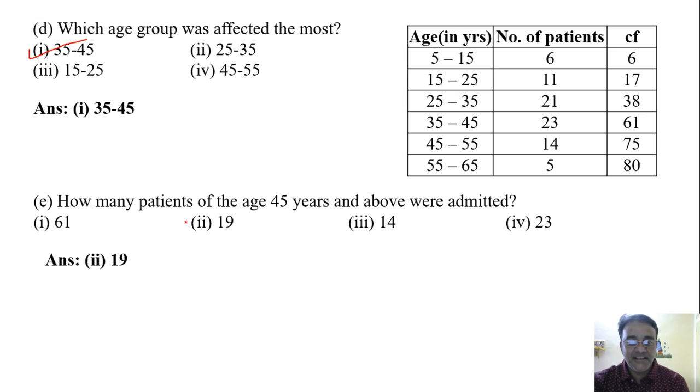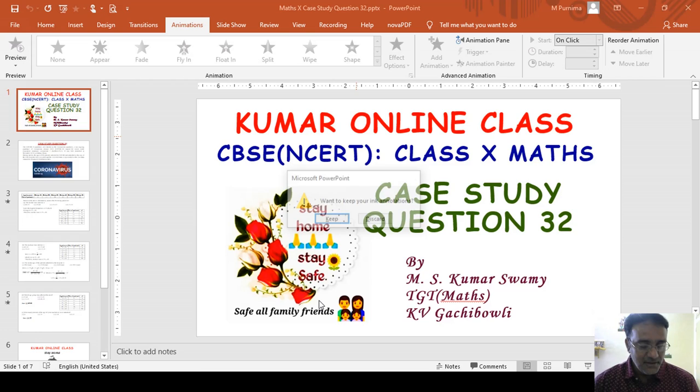This is the last question. We can frame many questions here: mean number of patients, mean age we can ask, or the mean of the lower limit of median class and upper limit of modal class. Like that we can frame so many questions. This is the last question of this case study. Now we'll see the next case study question in the next one. Thank you very much.